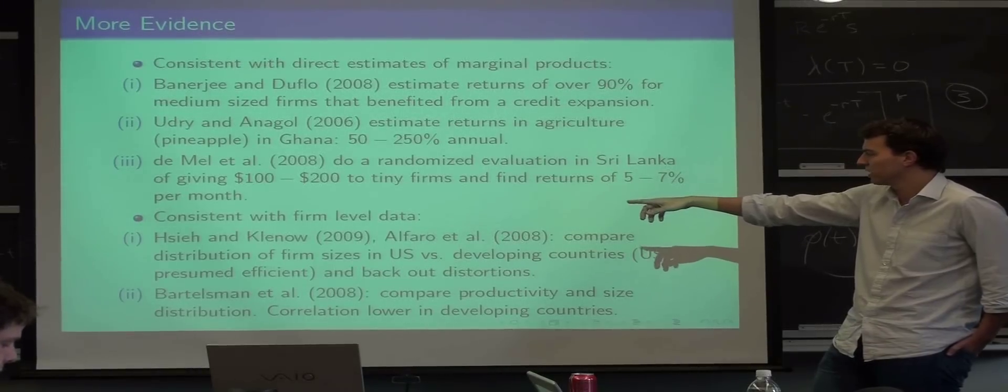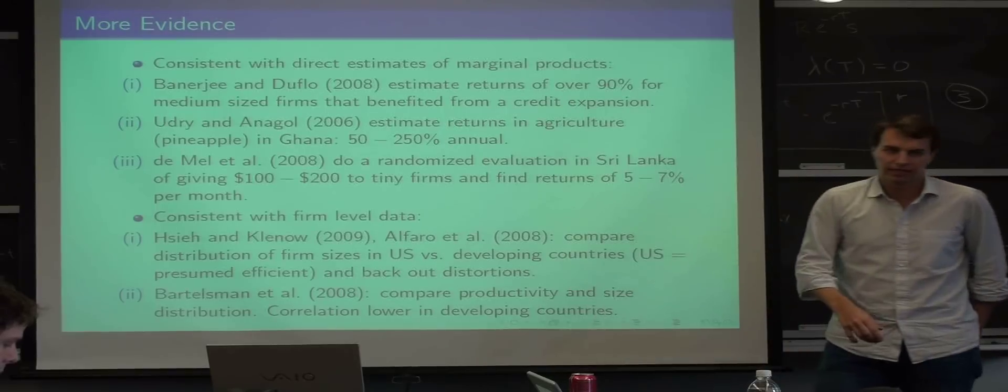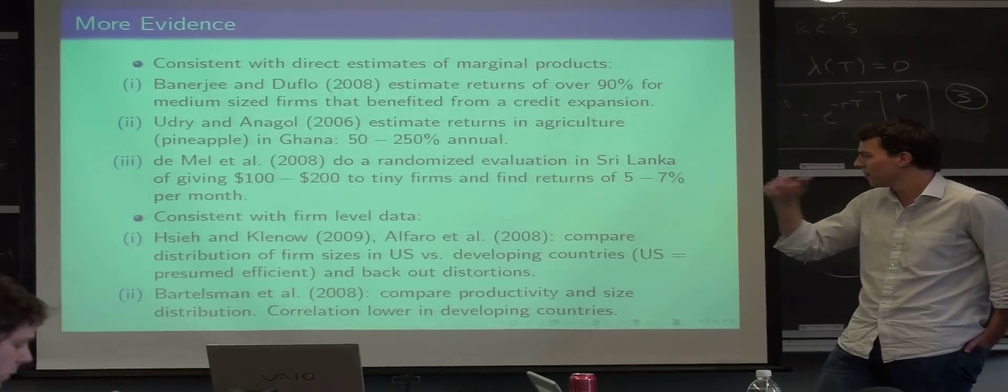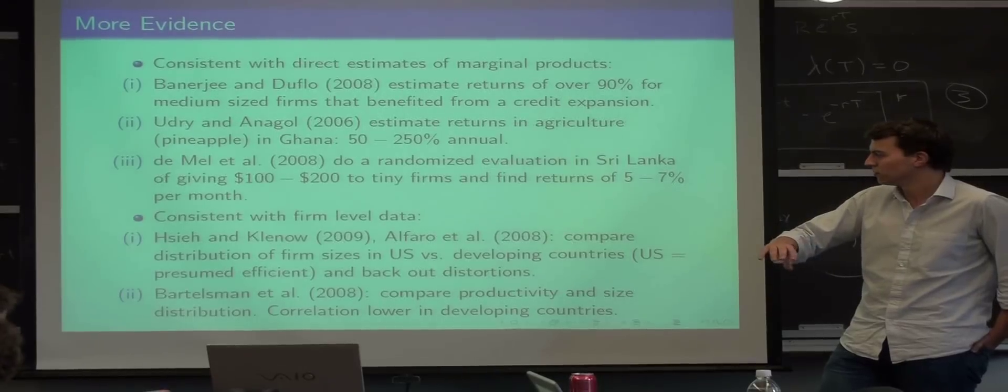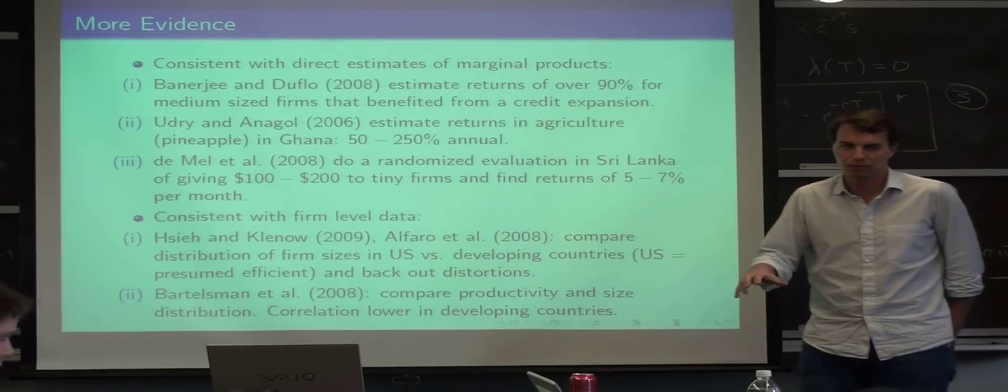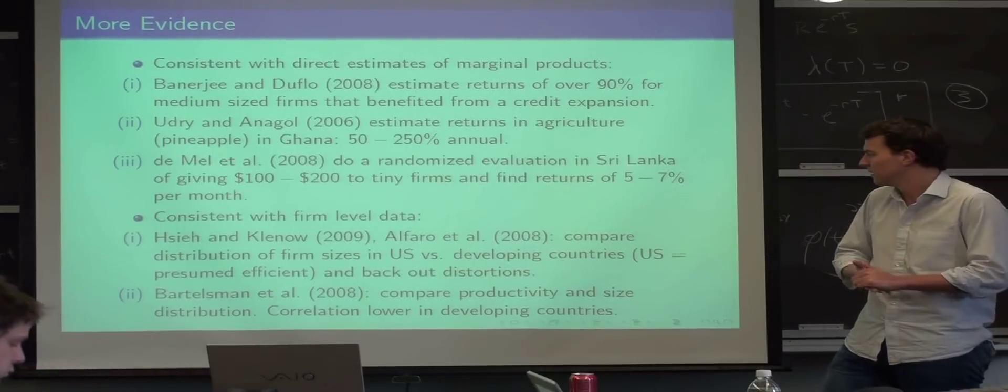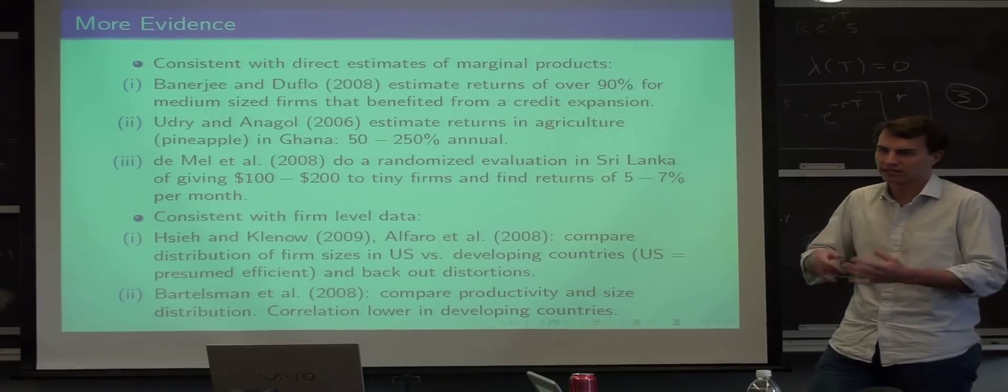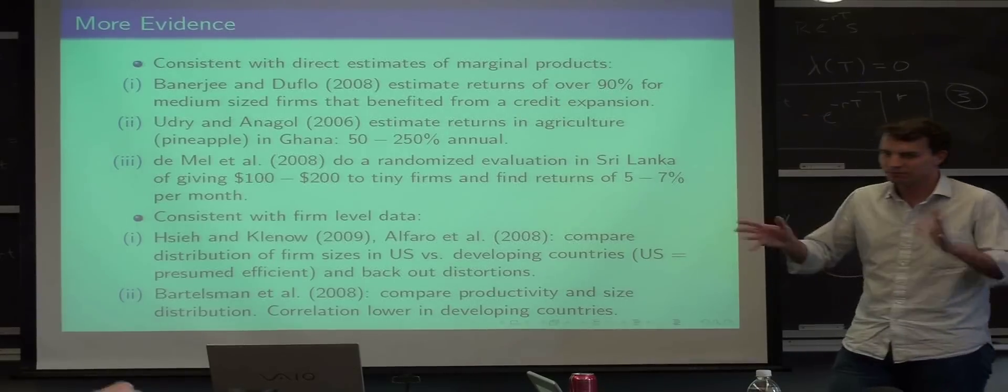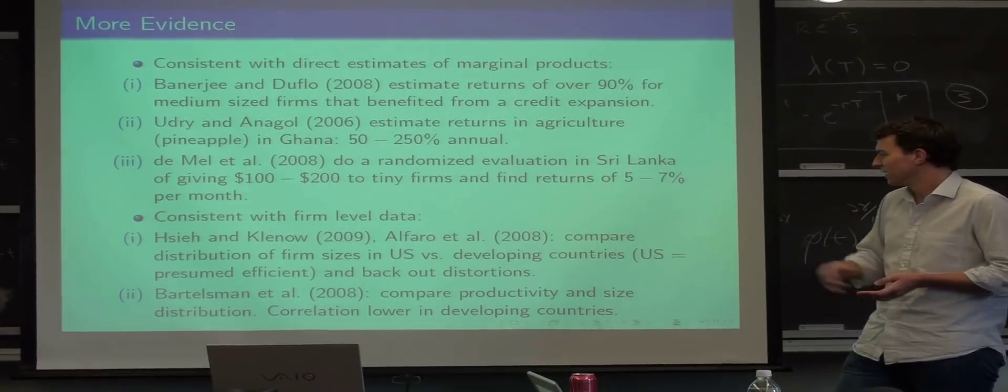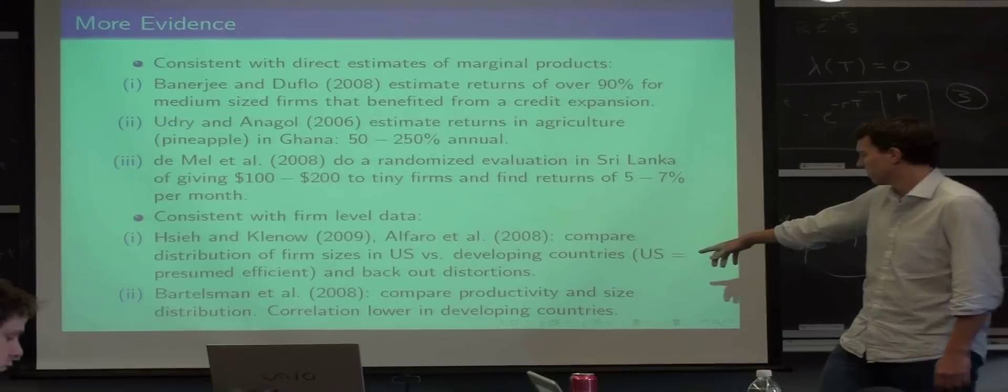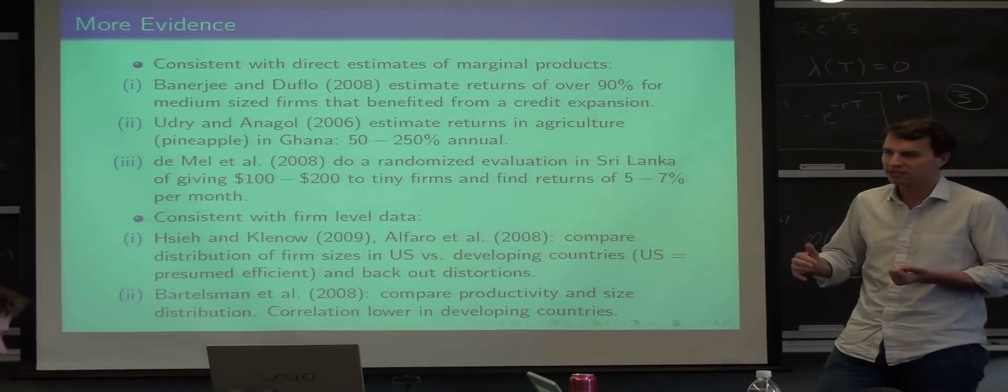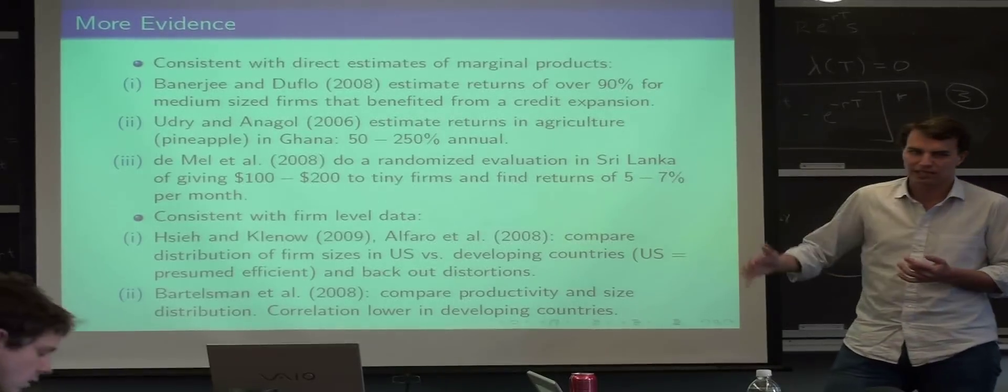It's also consistent with firm-level data. So there's this very influential study by Hsieh and Klenow, who basically have a firm-level data set for China, India, and the US, and they sort of estimate a structural version of... so they just assume some sort of production function for each firm, and then they estimate an industry equilibrium, and they then say that this equilibrium is very different from the one in the US, and from that sort of infer that there are distortions across plants. The idea is, it's usually that you look at the firm's size distribution. These guys estimate two distributions. They estimate the distribution of productivities and they estimate the size distribution.